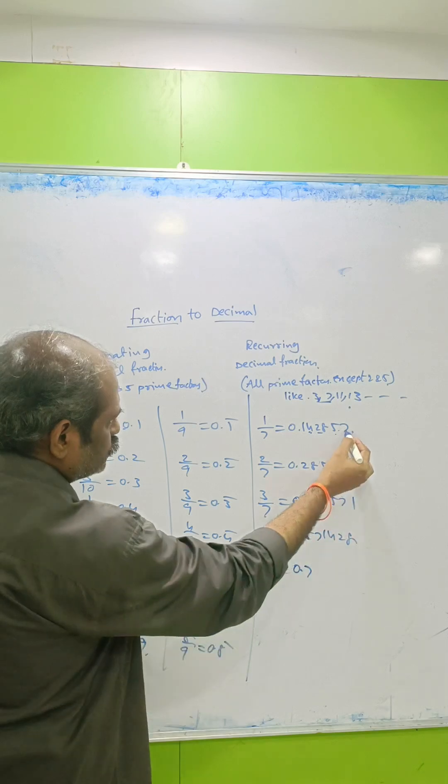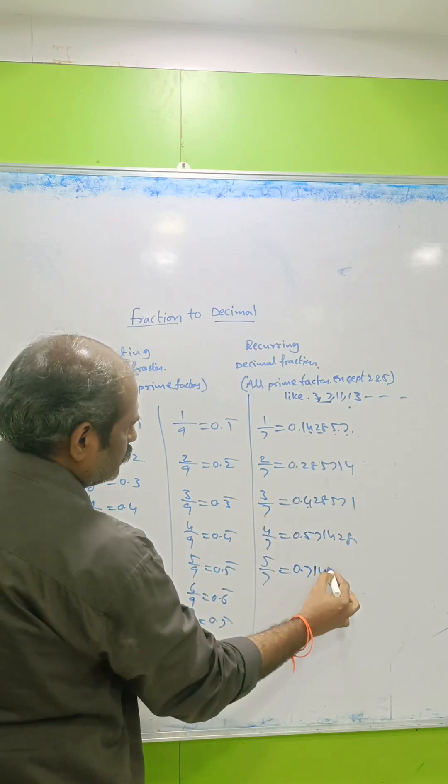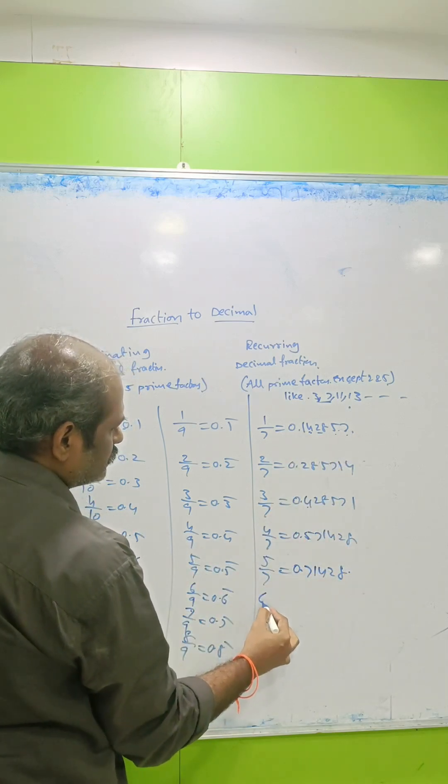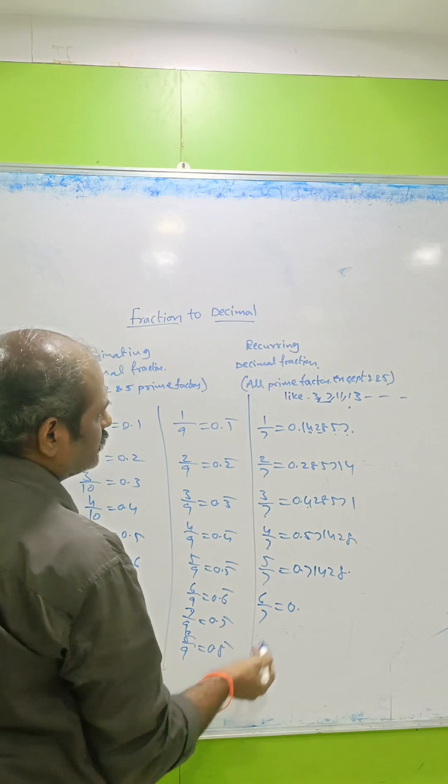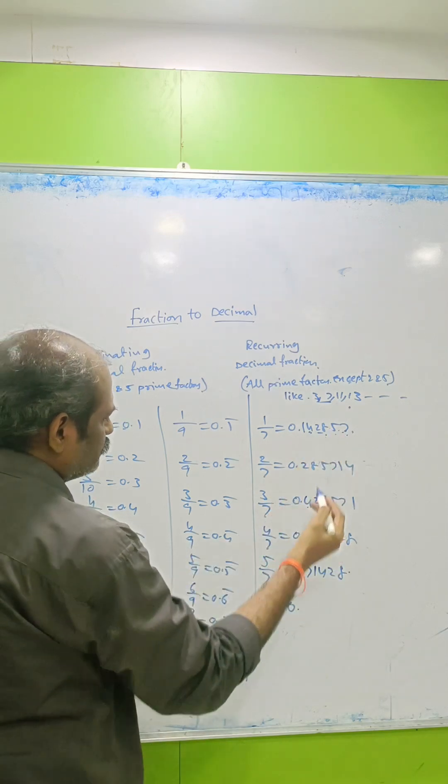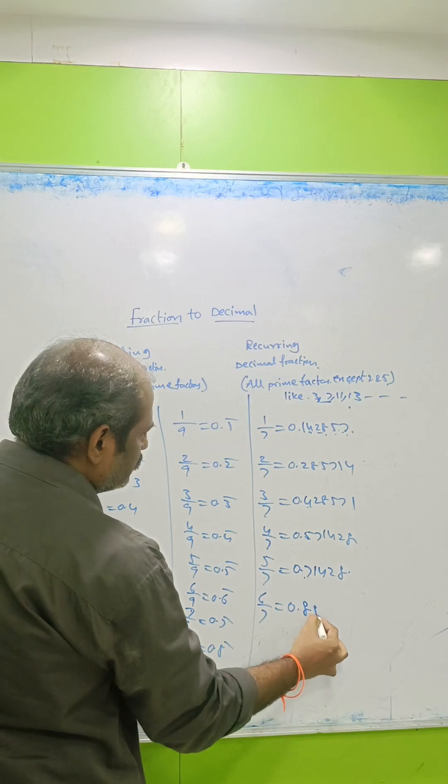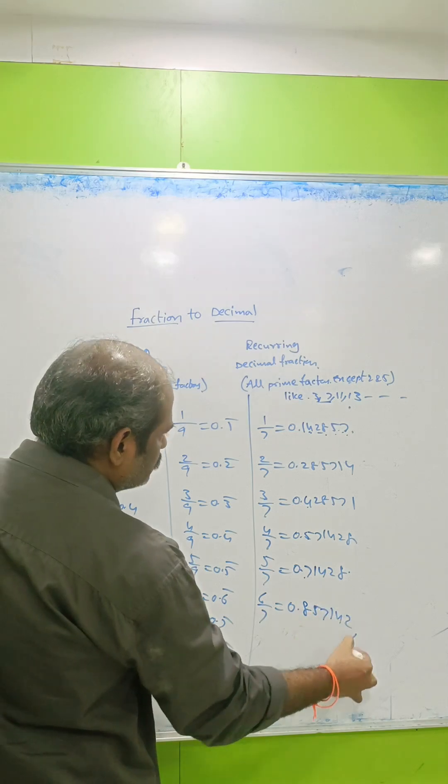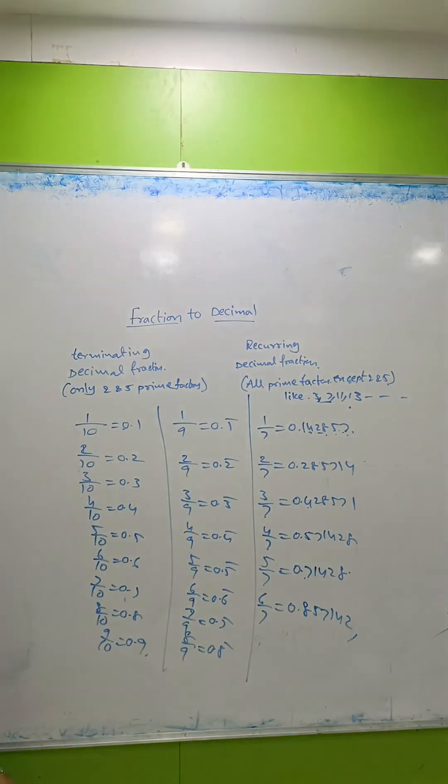We're getting 7, but 7 is already used, so we continue with 8: 6/7 = 0.857142. So these are the number patterns for fractions with denominator 7.